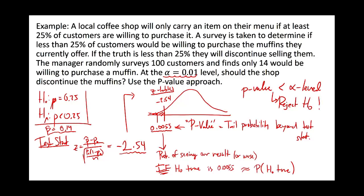The p-value is a way to quantify how strong your evidence is — the lower the p-value, the less likely the null hypothesis is. That's the same decision we had already made with the critical value approach. The p-value approach and the critical value approach won't result in conflicting decisions; they'll always lead you to make the same decision.